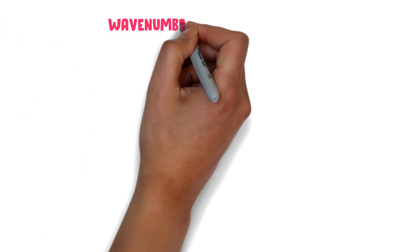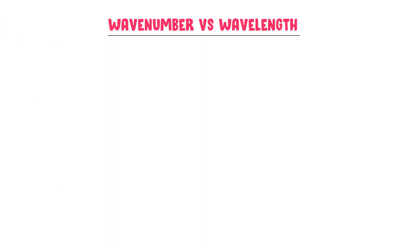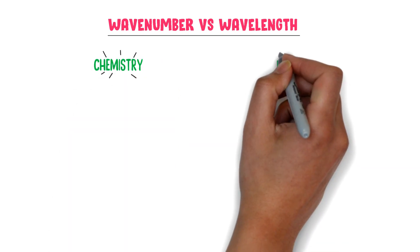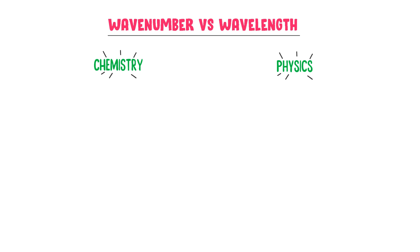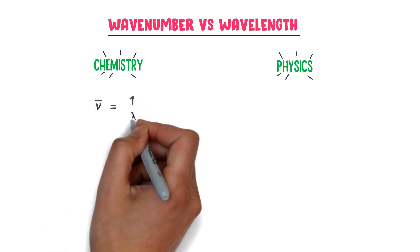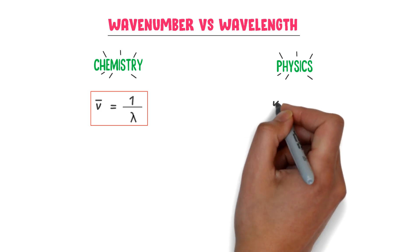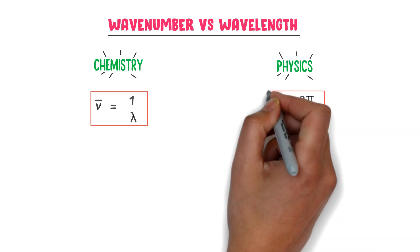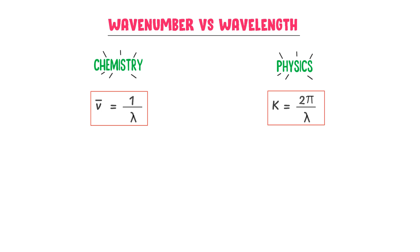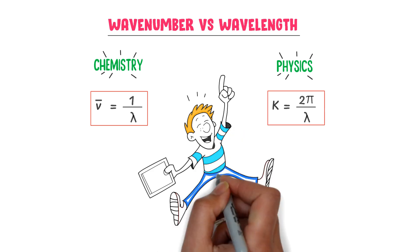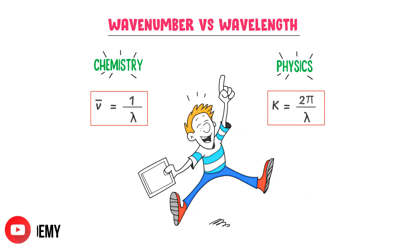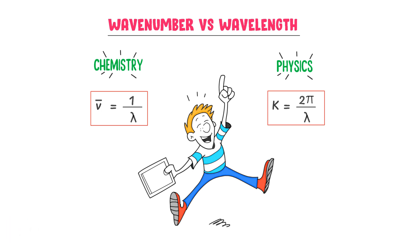Now, what is the relationship between wave number and wavelength? I will teach you this relationship both in chemistry and in physics. In chemistry, wave number is equal to the reciprocal of wavelength lambda. While in physics, wave number is equal to two pi upon wavelength lambda. Using these formulae, we can easily calculate any numerical in chemistry or in physics. I hope that you have learned all about wave number and wavelength.